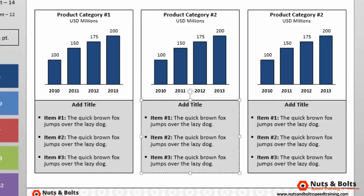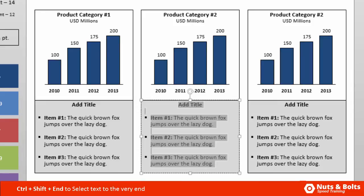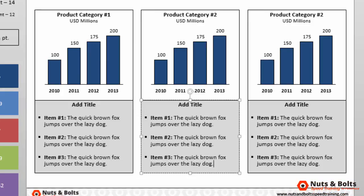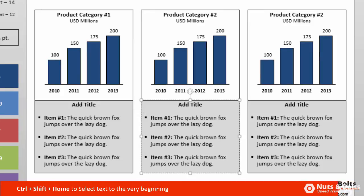You can also combine Control and Shift with these keys. Control+Shift+End will select everything within the object all the way to the end. If I'm at the end, Control+Shift+Home will select everything going back to the top.